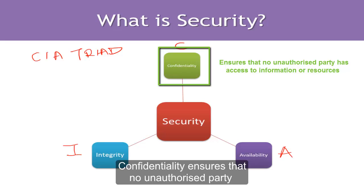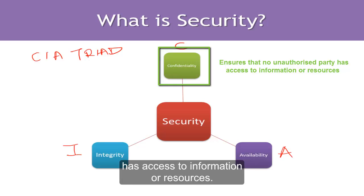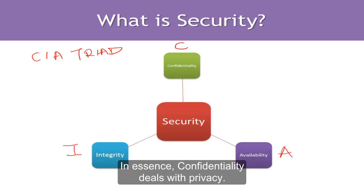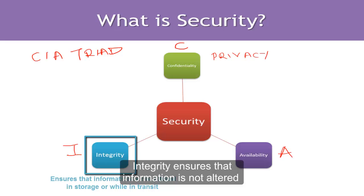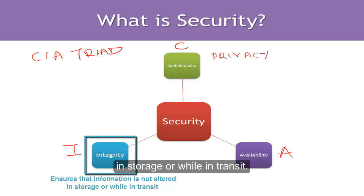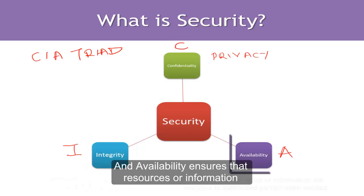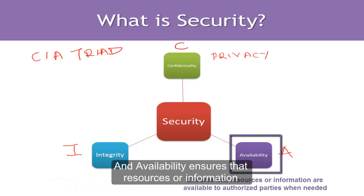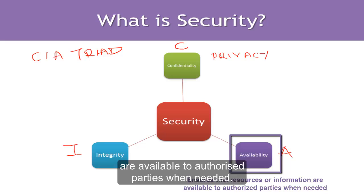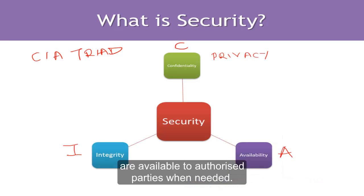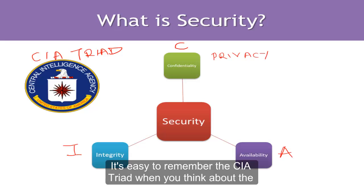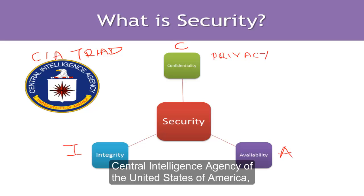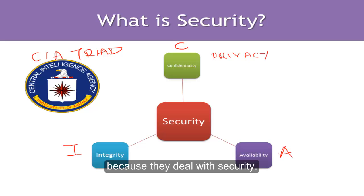Confidentiality ensures that no unauthorized party has access to information or resources — in essence, confidentiality deals with privacy. Integrity ensures that information is not altered in storage or while in transit. Availability ensures that resources or information are available to authorized parties when needed. It's easy to remember the CIA triad when you think about the Central Intelligence Agency of the United States, because they deal with security.